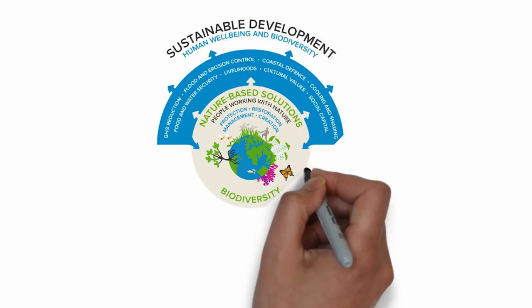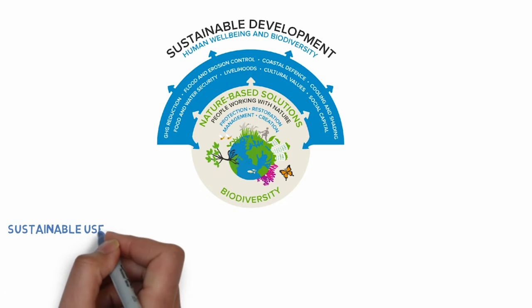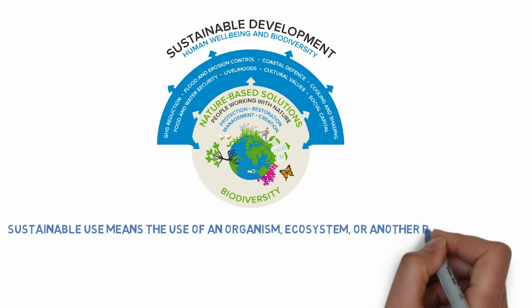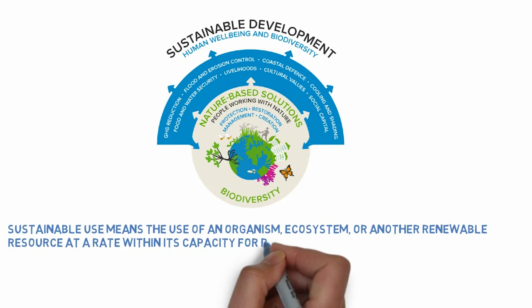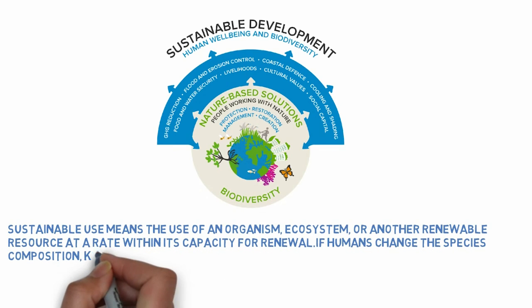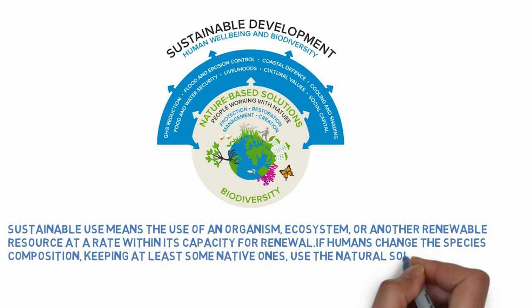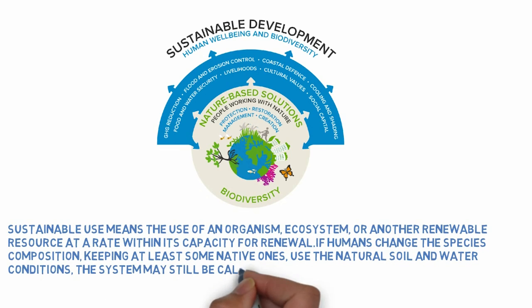In these situations there is a high degree of sustainable use. Sustainable use means the use of an organism, ecosystem, or another renewable resource at a rate within its capacity for renewal. If human changes to the species composition keep at least some native ones and use the natural soil and water conditions, the system may still be called a semi-natural ecosystem.